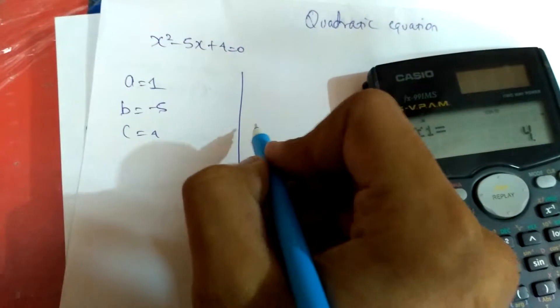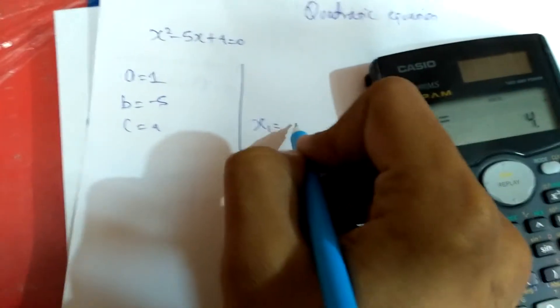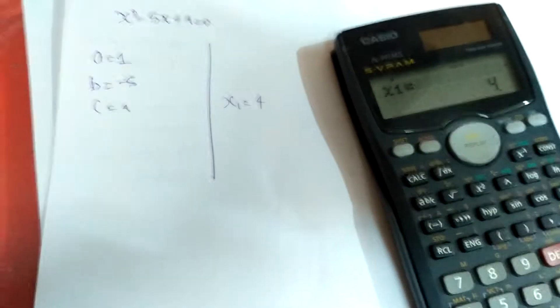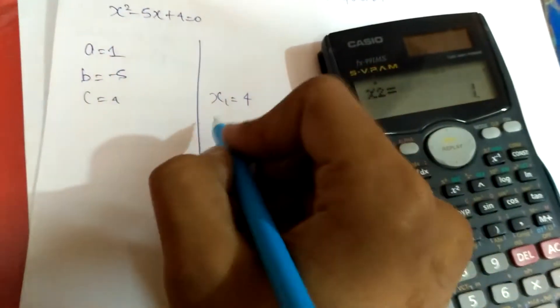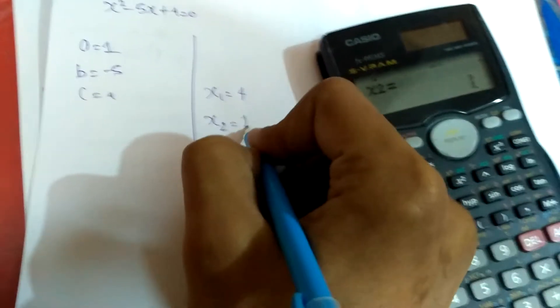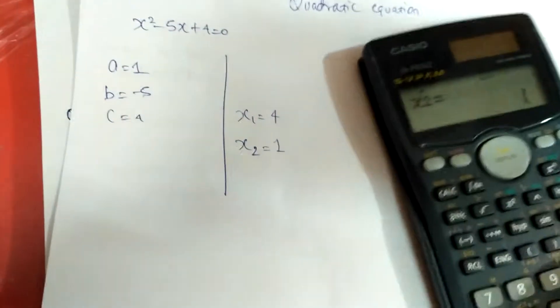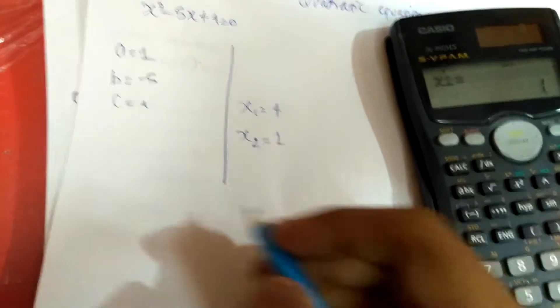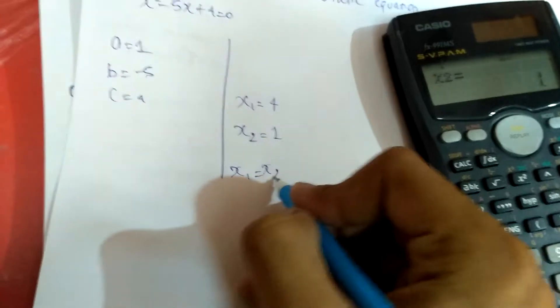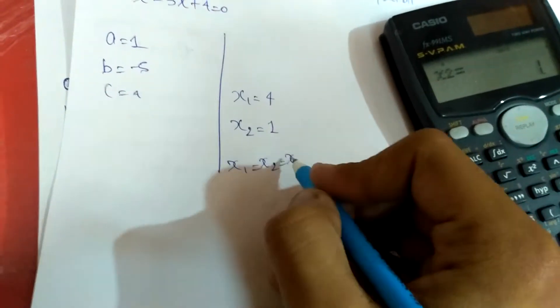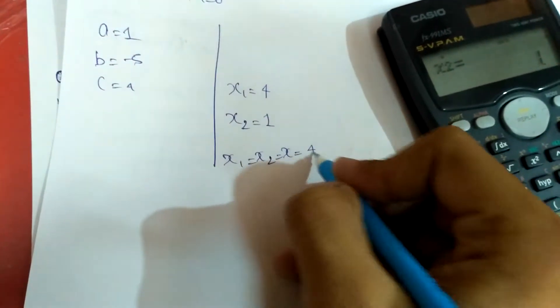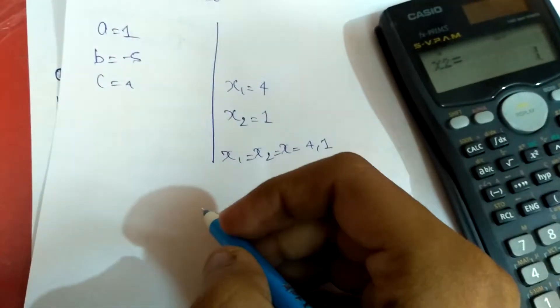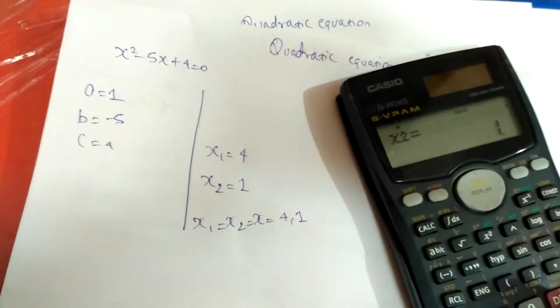So we have got x1 equal to 4. Then again press equal to get x2 equal to 1. x1 and x2 is nothing but the value of x. You can also write it as x1, x2 equal to x, which are 4 and 1. So this was about solving a quadratic equation of 2 degree.